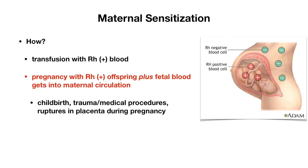You might be wondering how does mom get exposed to these foreign antigens in the first place. This can happen in a few ways. The first is through transfusion with RH positive blood. But more commonly, pregnancy with an RH positive offspring plus mixing of blood between maternal and fetal circulation — this can happen through childbirth, trauma or medical procedures, or any ruptures in the placenta during pregnancy, such as with placental abruption.